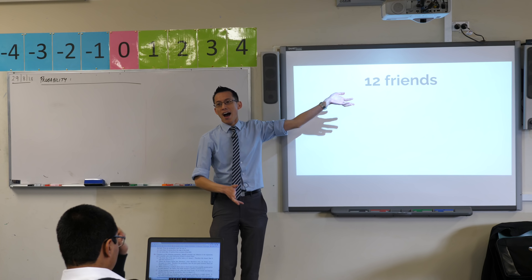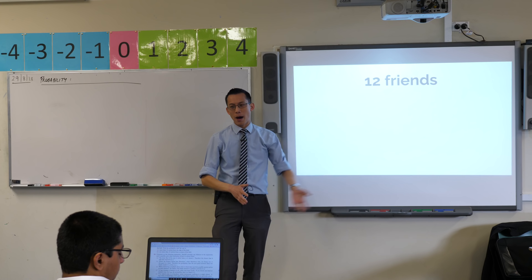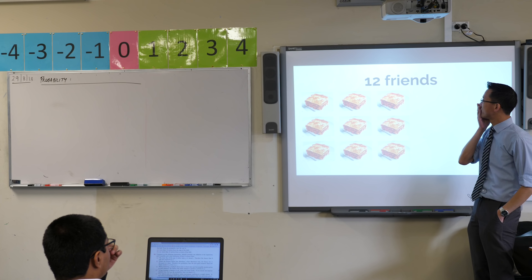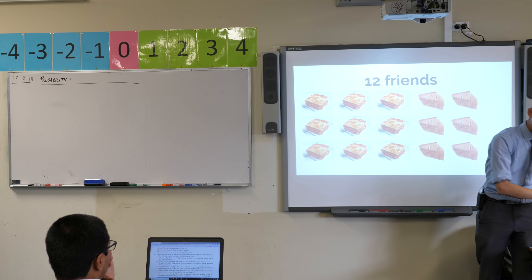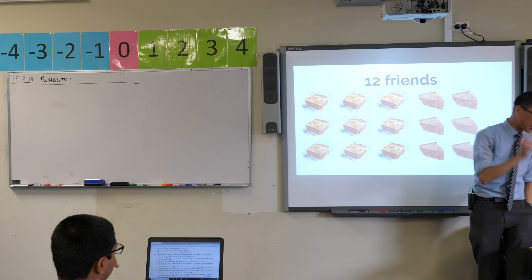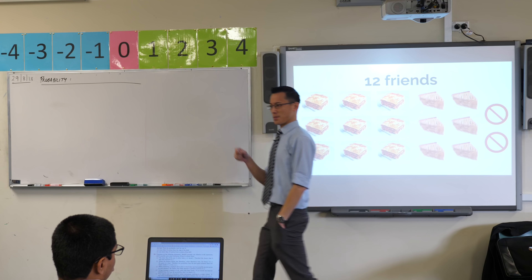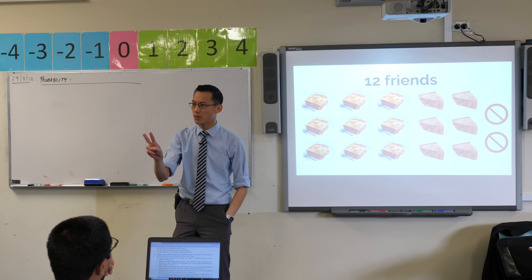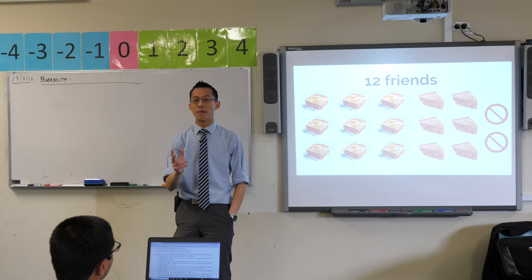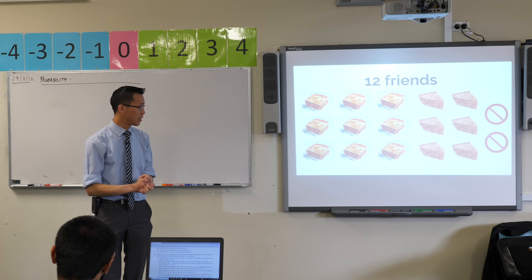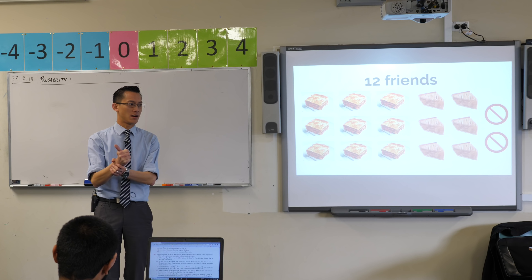At a dinner party, 12 friends go out to dinner. Of those 12 friends: nine people eat lasagna, six people eat apple pie — you can tell it was lunchtime when I planned this lesson — and two people ate neither. So: 12 people, nine ate lasagna, six ate apple pie, two ate neither. My question is: if I selected one of these 12 friends at random, what's the probability that they ate lasagna only?